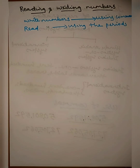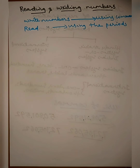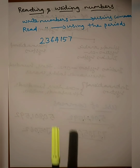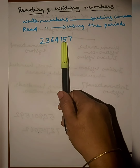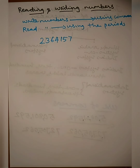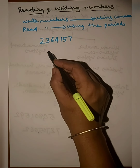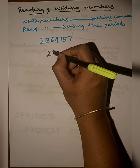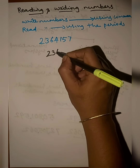Next we discuss reading and writing numbers. We write numbers using commas, and we read numbers using periods — where a period represents a group such as ones, tens, thousands, lakh, crore, etc. Let's look at an example of how to write and read a number. First we write the number and place the commas.